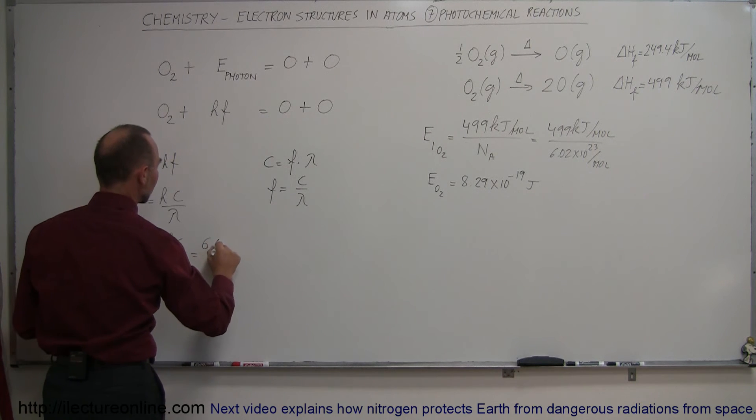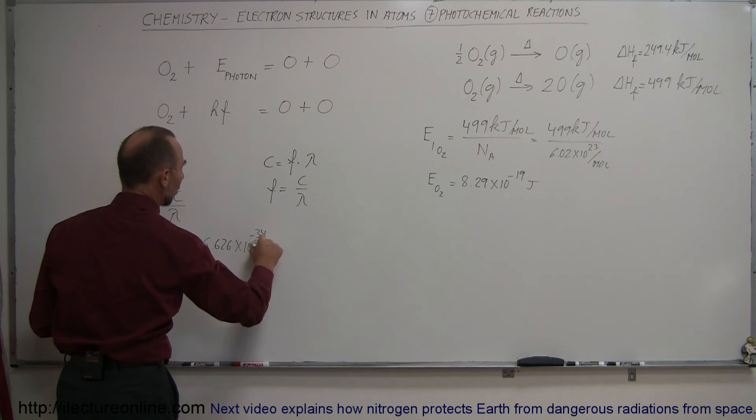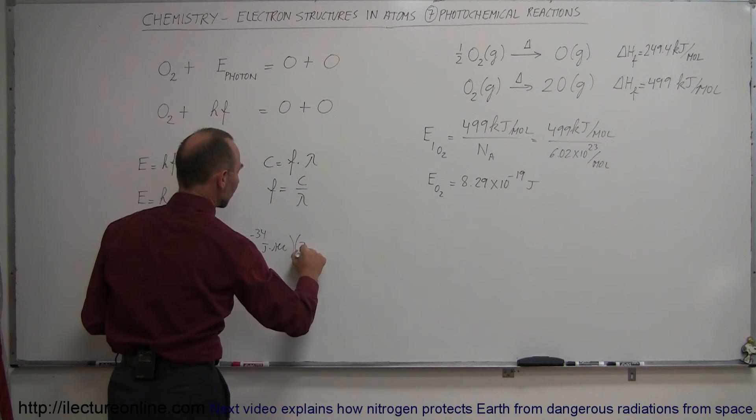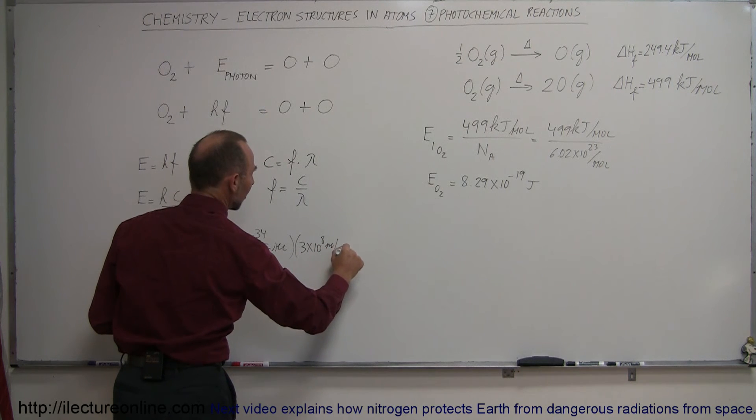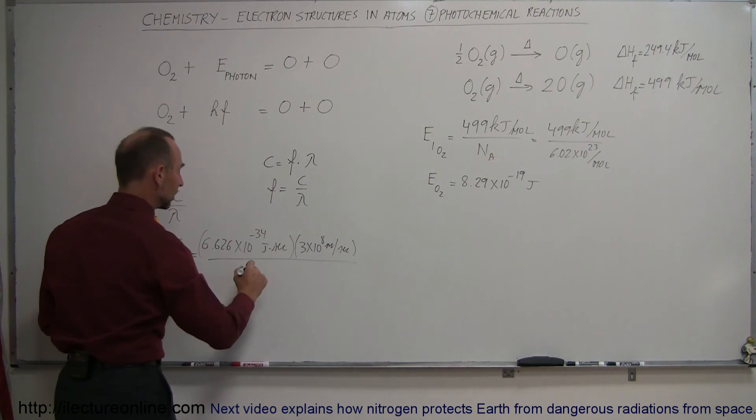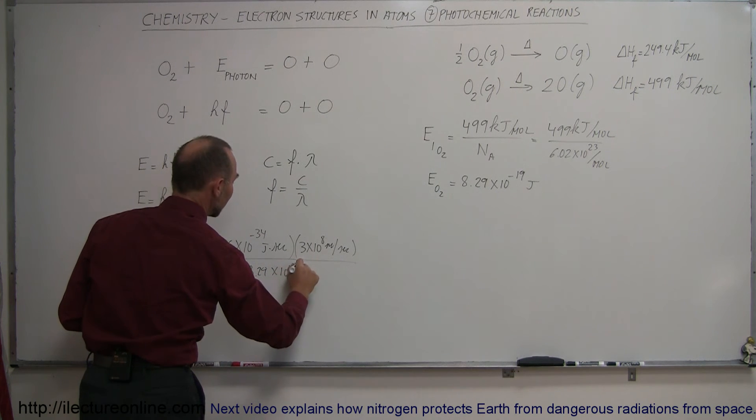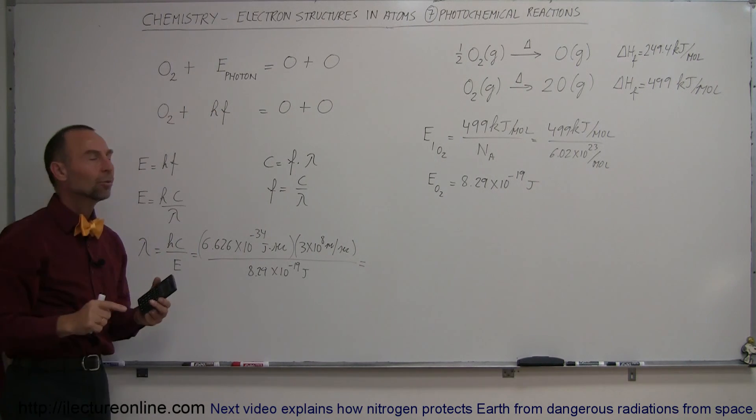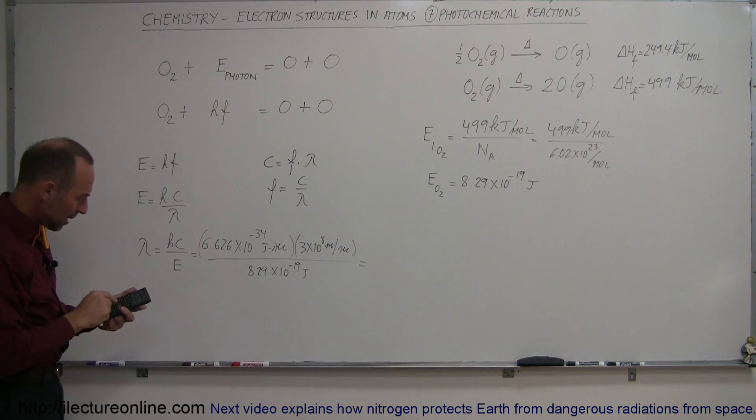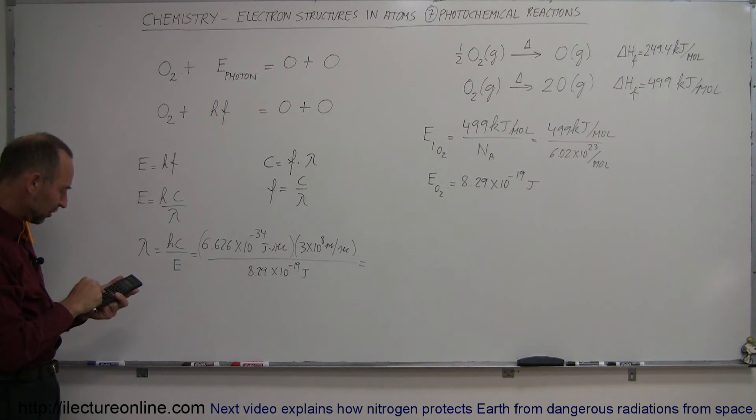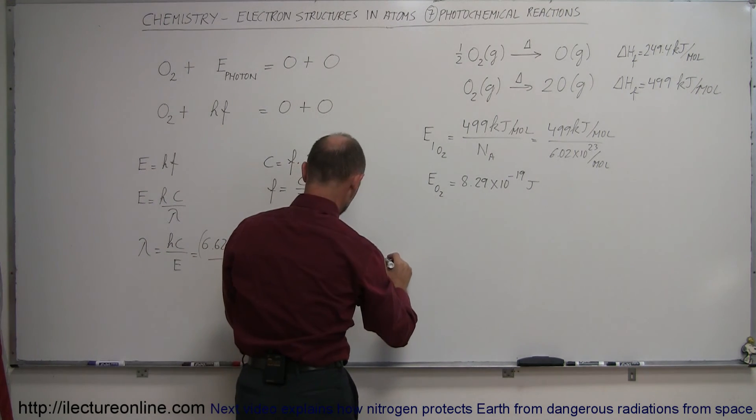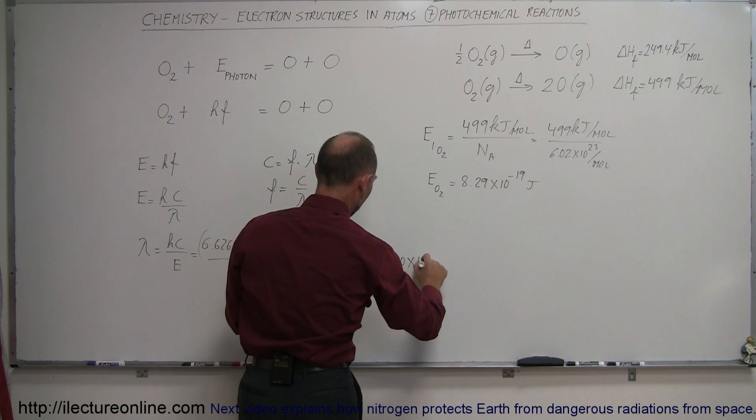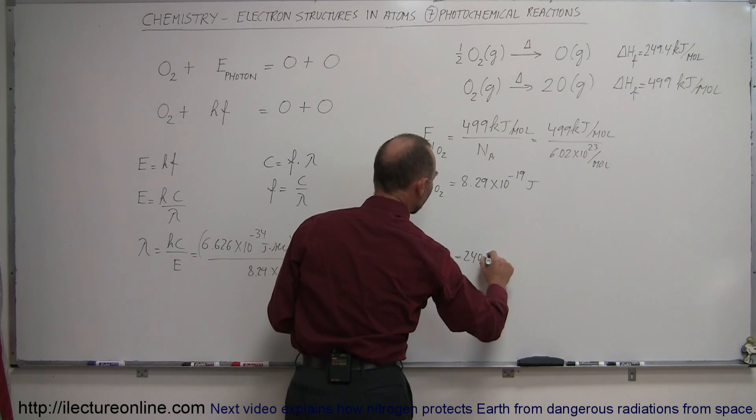Planck's constant being 6.626 times 10 to the minus 34 joules times seconds, times the speed of light, which is 3 times 10 to the 8 meters per second, and divide the whole thing by the energy, which we just calculated to be 8.29 times 10 to the minus 19 joules. This will tell us what kind of photon is able to split an oxygen molecule into its two individual oxygen atoms. And this is equal to about 240 times 10 to the minus 9 meters, which is 240 nanometers.